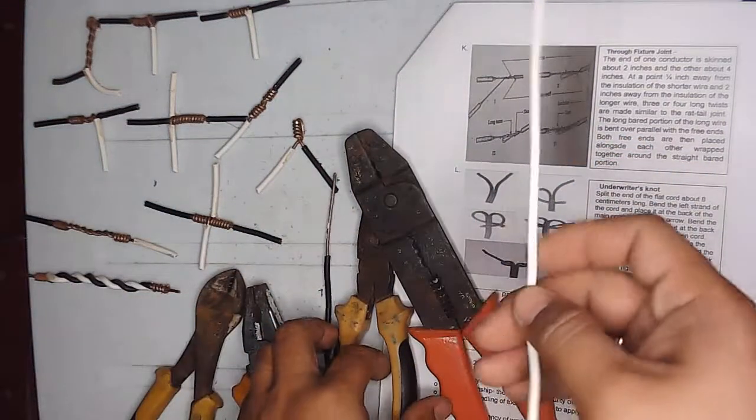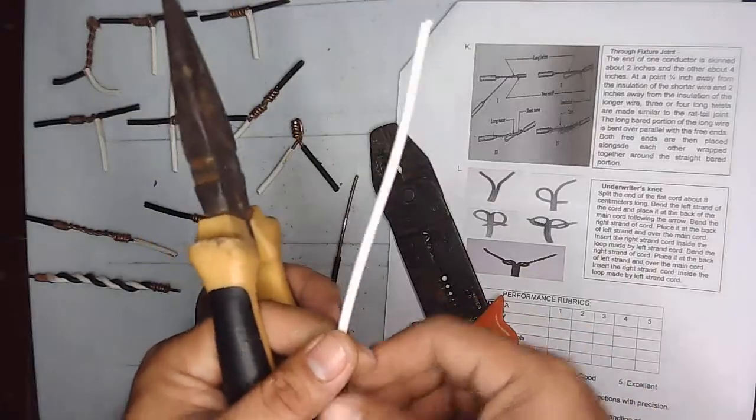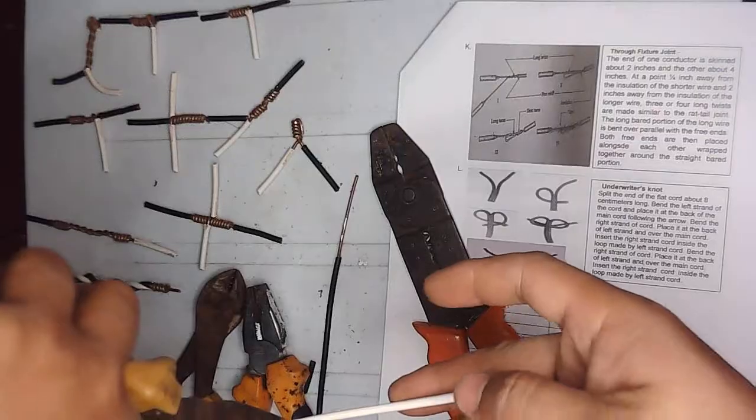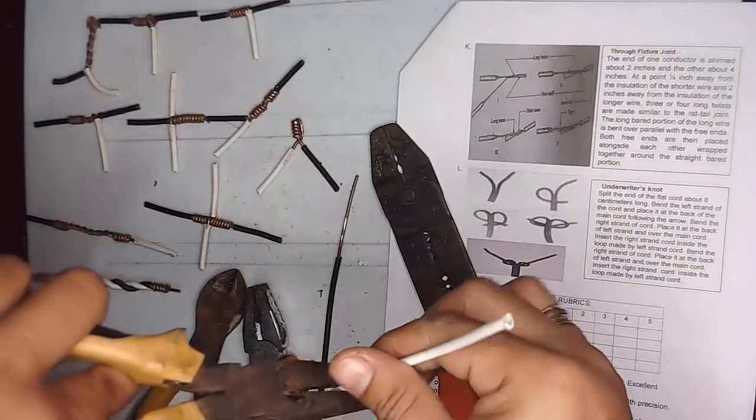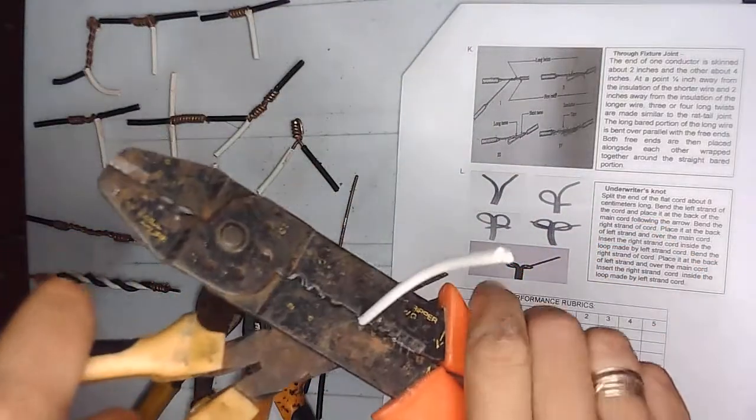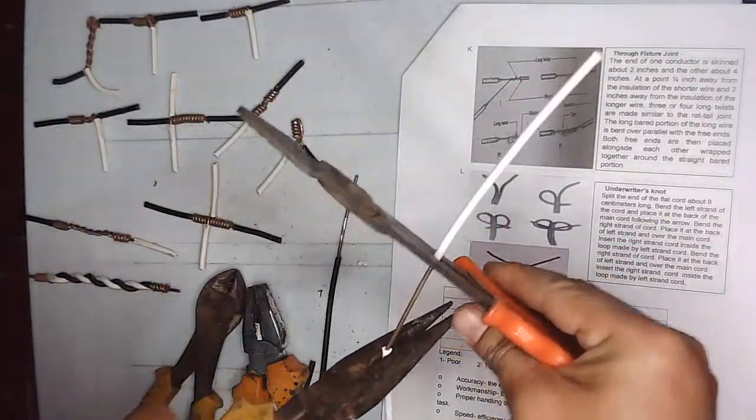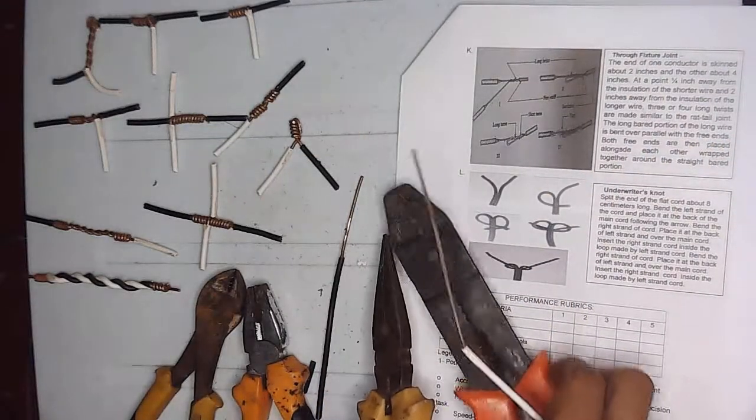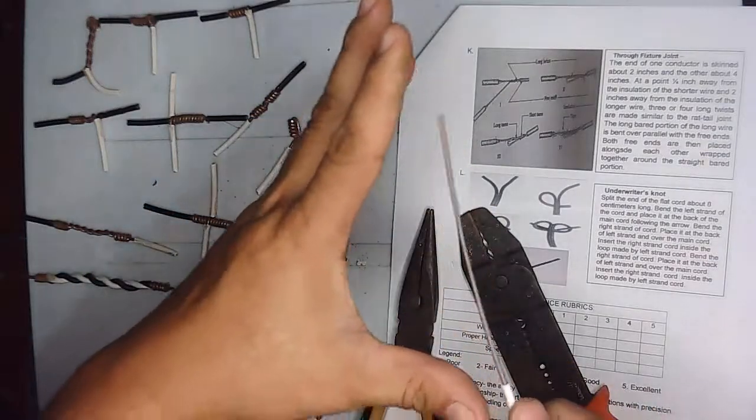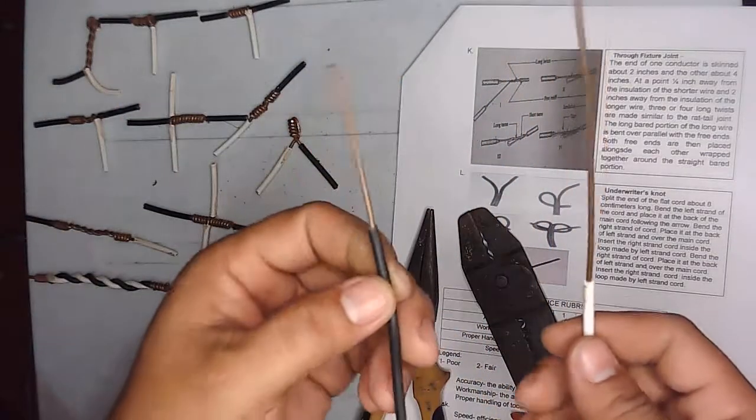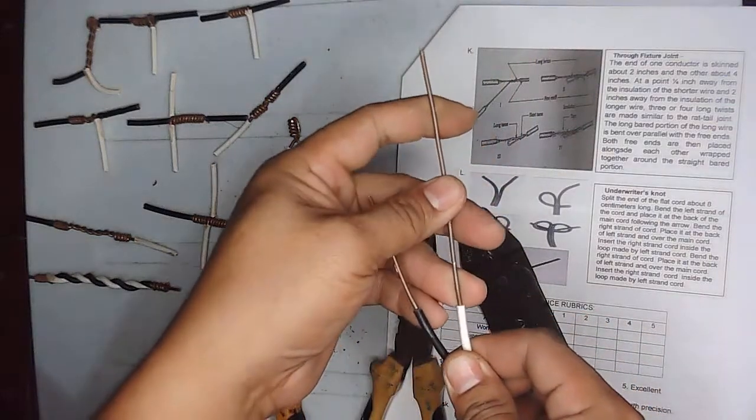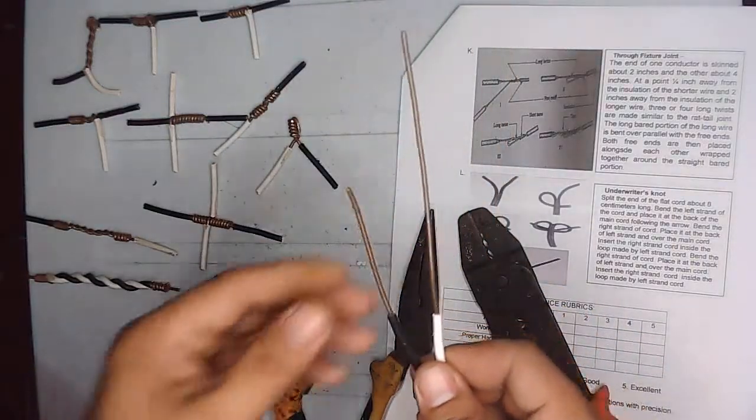And the other one is about four inches, so double the first wire we stripped. So from here to here, okay, so more or less it is four inches. Then strip. Okay, so that's it.